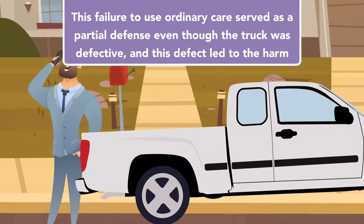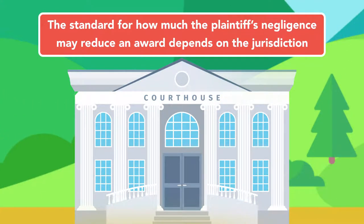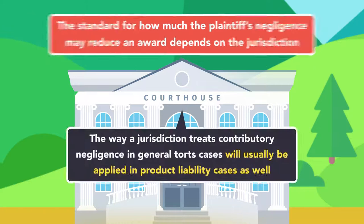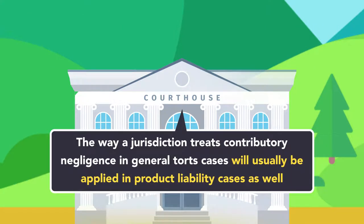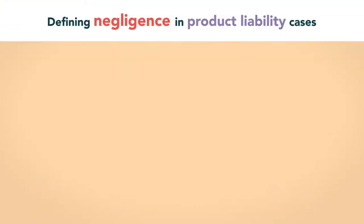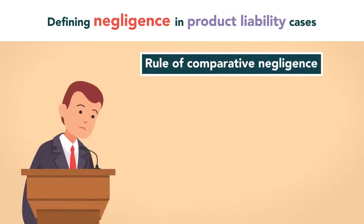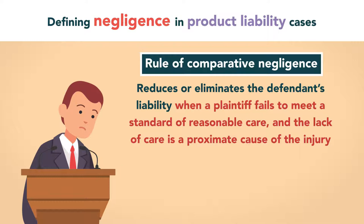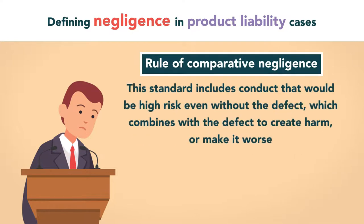This failure to use ordinary care served as a partial defense even though the truck was defective and this defect led to the harm. The standard for how much the plaintiff's negligence may reduce an award depends on the jurisdiction. The way a jurisdiction treats contributory negligence in general torts cases will usually be applied in product liability cases as well. The rule of comparative negligence reduces or eliminates the defendant's liability when a plaintiff fails to meet a standard of reasonable care and the lack of care is a proximate cause of the injury. This standard includes conduct that would be high risk even without the defect, which combines with the defect to create harm or make it worse.